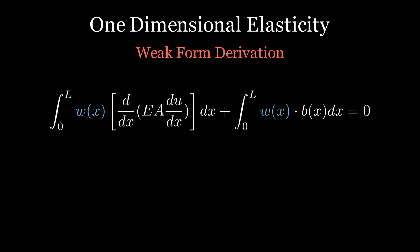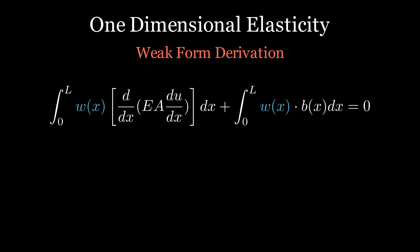And its approximation requires smooth trial functions. Such smooth trial functions are difficult to construct, especially in second and third dimensions. Furthermore, the resulting stiffness matrix would not be symmetric because the first integral is not symmetric in W and U.